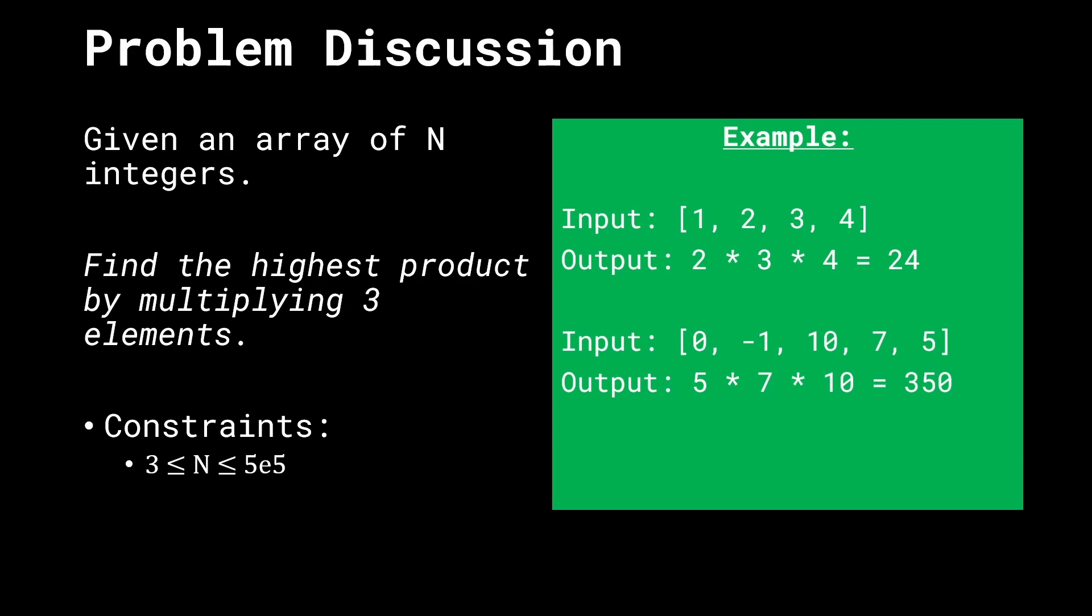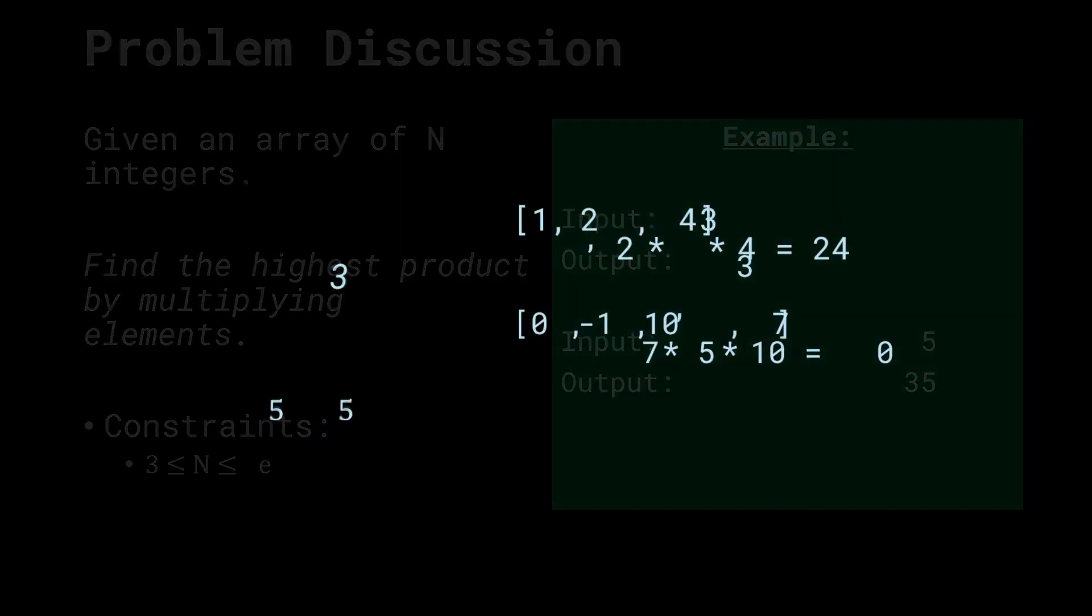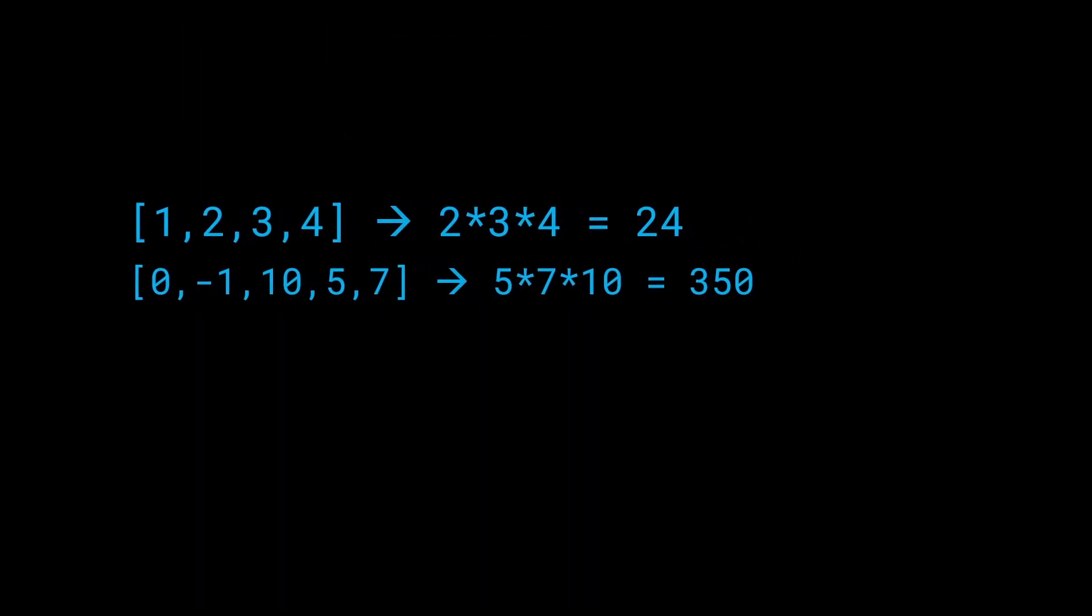What is one thing that is immediately clear from these examples? We realize we can sort the array and pick the top 3 elements. In fact, one of the observations in solving this question is that we have to take the highest 3 elements, multiply them together, and return them at the end.